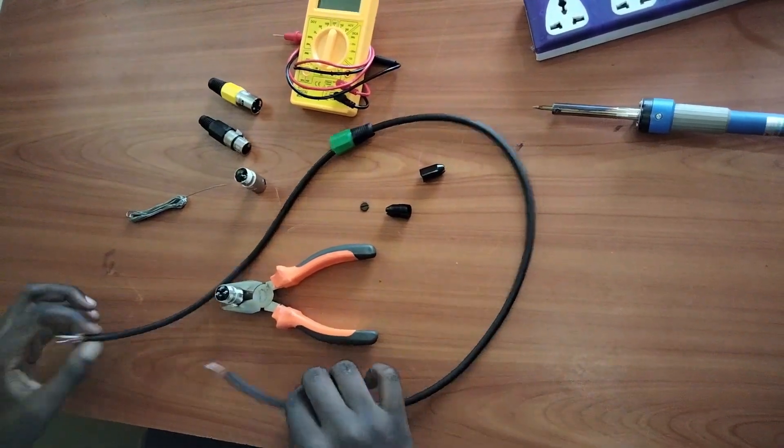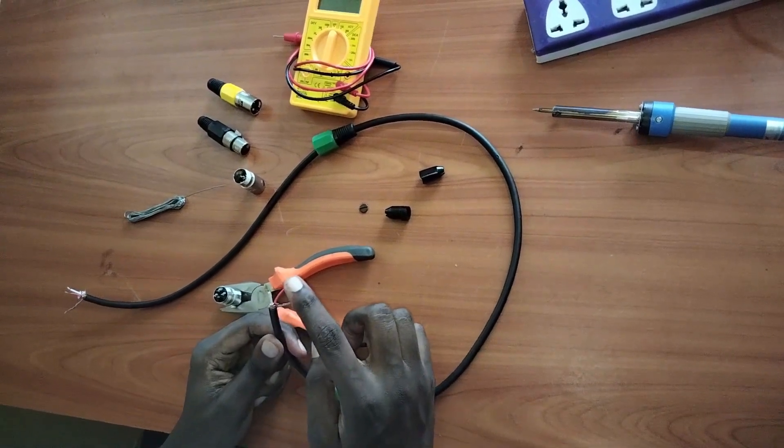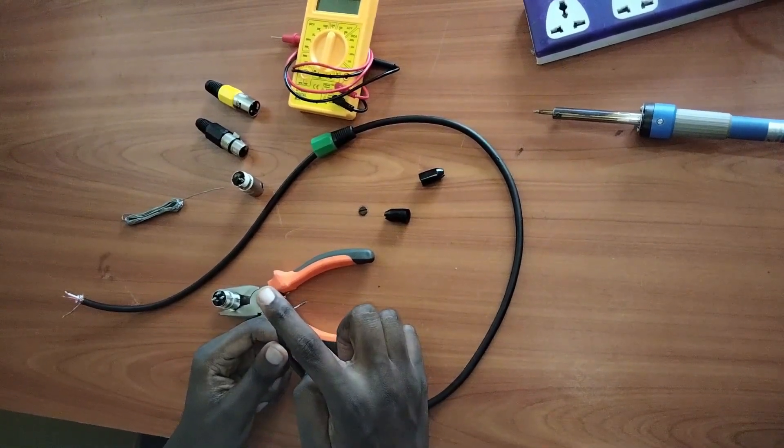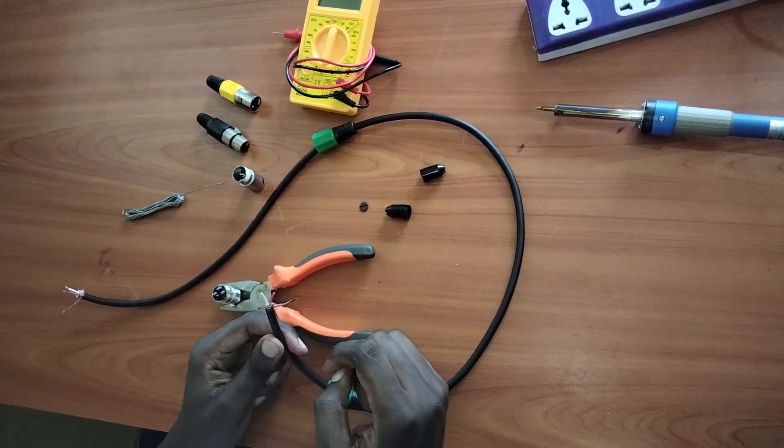Now we are going to be using this cable, it's 1 meter in length. The red part is the positive terminal, the white is the negative and this one is the earth.